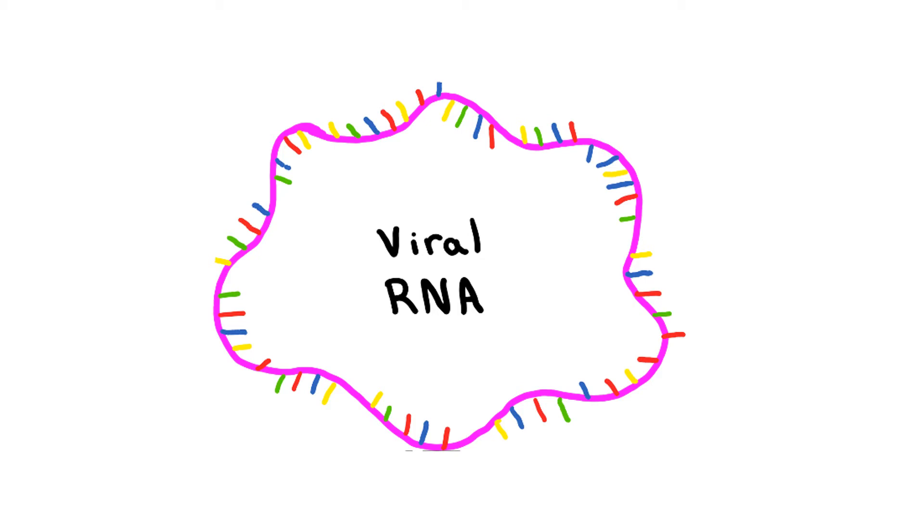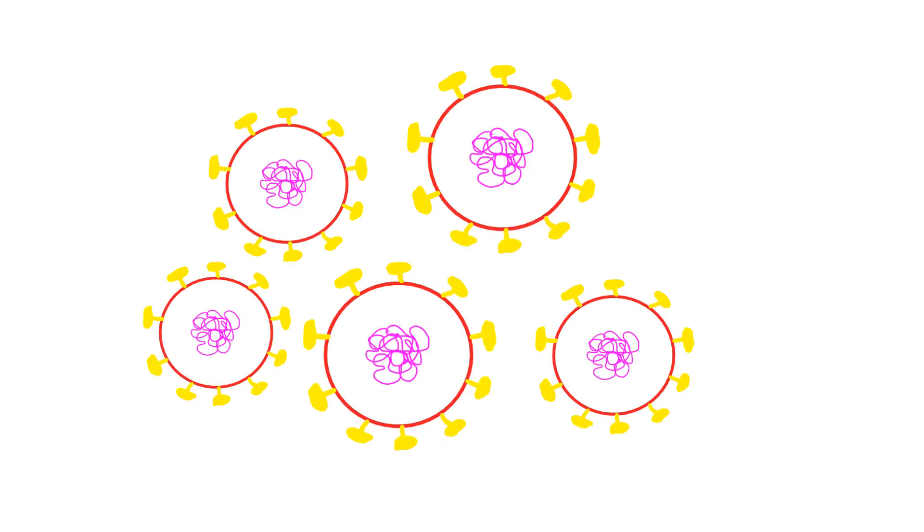This replication of the virus causes the infected cells to stop performing its normal functions. The cells devote their machinery to making new viral particles, which then bud from the cells. These new viral particles can move on to infect other cells. The sustained infection of these cells results in inflammation of lung tissue, which causes the severe pneumonia symptoms that an infected person would experience.